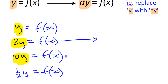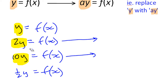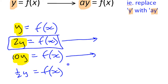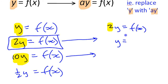If you see a function written, it likely won't be written with the number on the y side, because you want y isolated by itself. So it's important to realize that 2y = f(x) can be rewritten with the 2 on the other side — but if it moves to the other side, it becomes one half. That's because if you divide both sides by 2, the 2 cancels and you get y = ½ f(x).